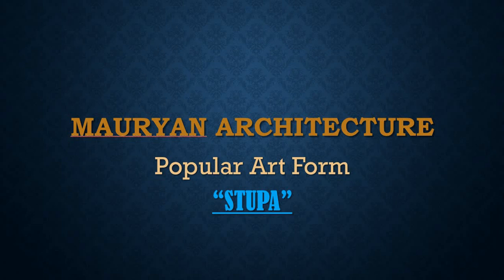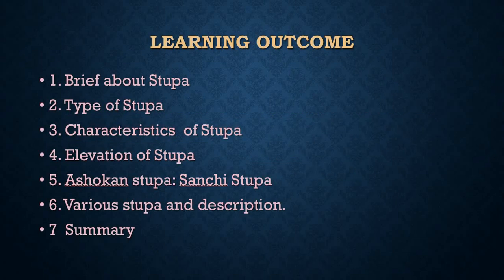Hello and welcome. Today's topic is Mauryan popular art — the Stupa. We'll cover: a brief introduction to the Stupa, types of Stupa, characteristics of Stupa, elevation of Stupa, Ashokan and Sanchi Stupa, various other Stupas in India, and finally a summary. Let's get started.